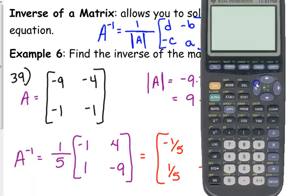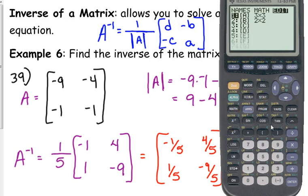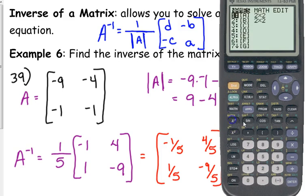Now, you can use your calculator to check this. For a 2 by 2, I will insist upon seeing your work. But you can use your calculator to check it. So, again, just go to your matrix. Put it in matrix A. Okay, it's a 2 by 2. Type in the original, negative 9, negative 4, negative 1, negative 1. Go to your home screen. Go back to matrix. Select A.